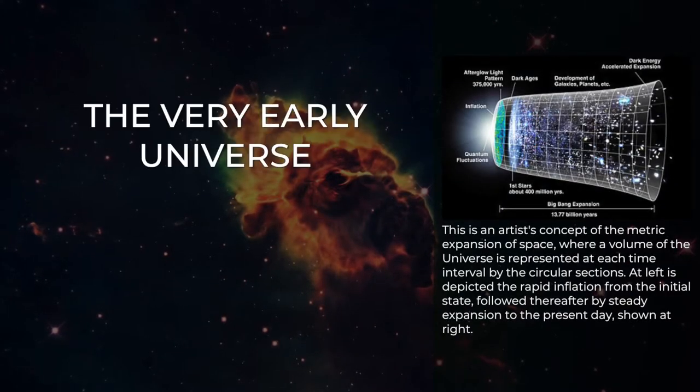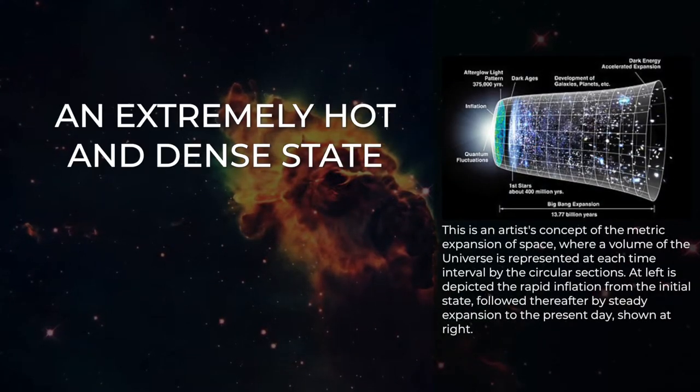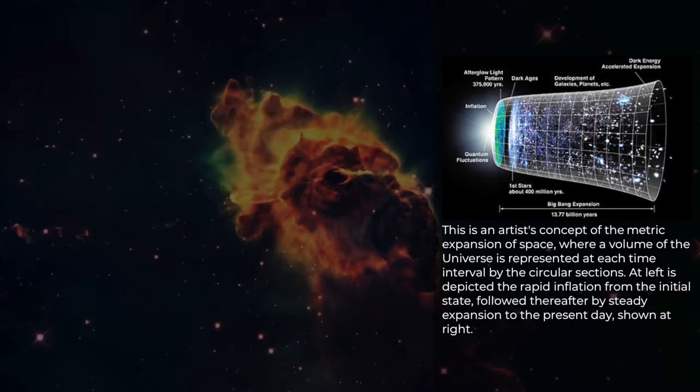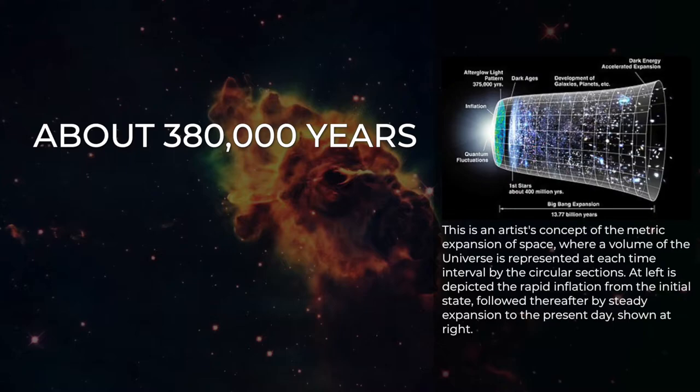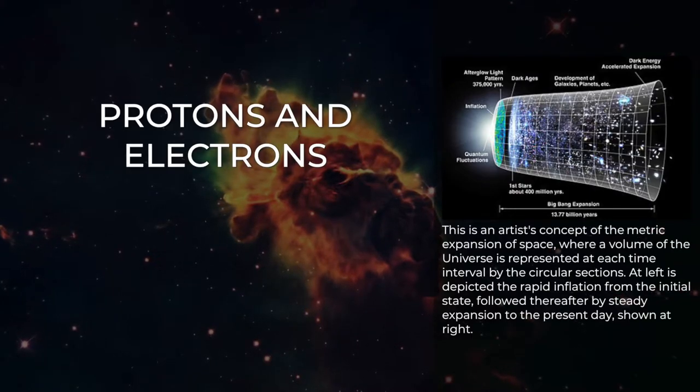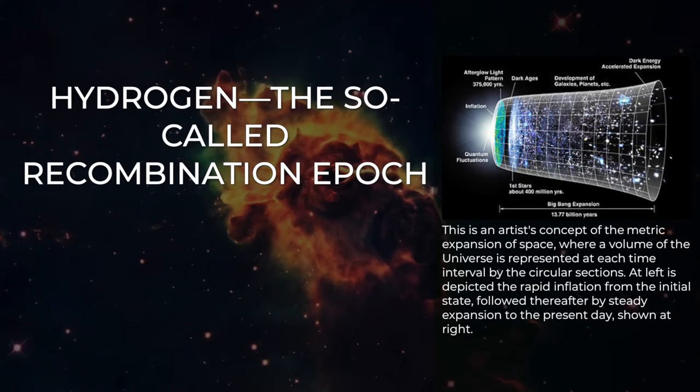According to the Big Bang theory, the very early universe was an extremely hot dense state about 13.8 billion years ago which rapidly expanded. About 380,000 years later the universe had cooled sufficiently to allow protons and electrons to combine and form hydrogen, the so-called recombination epoch.